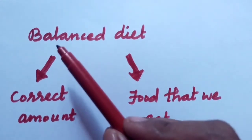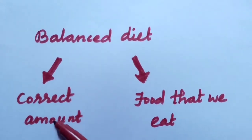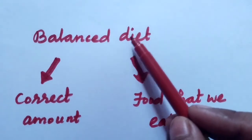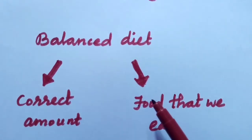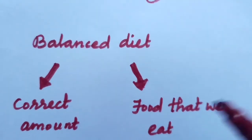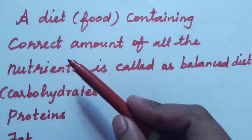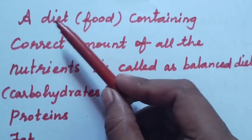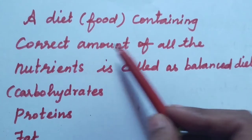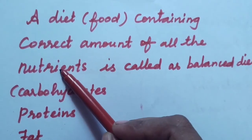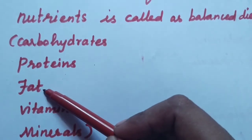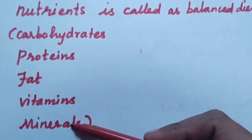Balanced means balancing — it means the correct amount. The nutrients in the food are in the correct amount. So balanced diet means the food that we eat containing all the nutrients in the correct amount, and that is called a balanced diet. What are the nutrients present in the food? Carbohydrates, proteins, fats, vitamins, and minerals.